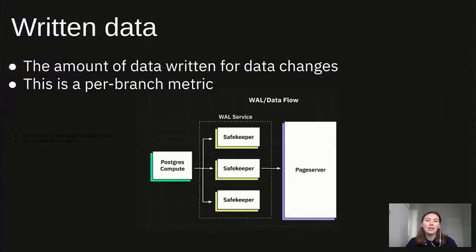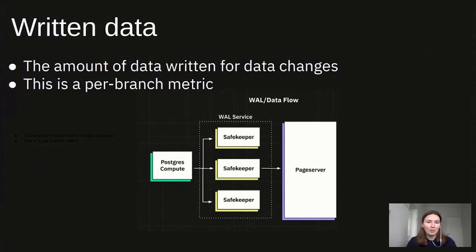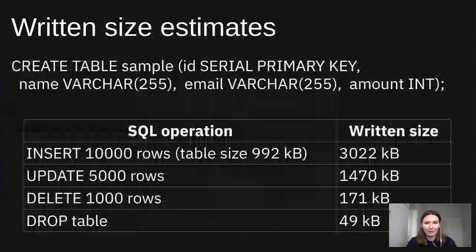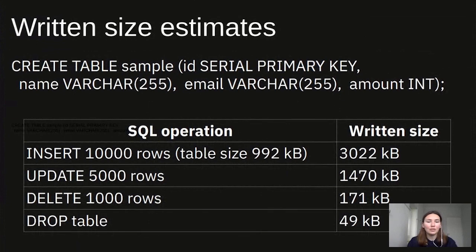The next metric is written data. It shows the amount of data written by PostgreSQL for data changes — in other words, this is the size of the WAL generated by PostgreSQL. The price for this metric reflects our internal WAL service costs. If you're using multiple write branches, this metric is calculated independently for each branch and summed up at the end of a billing period. On this slide you can find some rough estimates of WAL size generated by different SQL operations. For ordinary workloads such as inserts, updates, and data uploads, the amount of WAL is usually proportional to the amount of data.